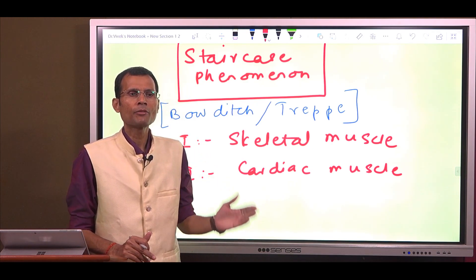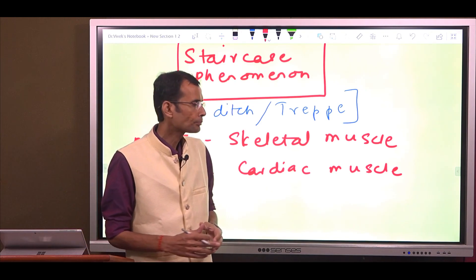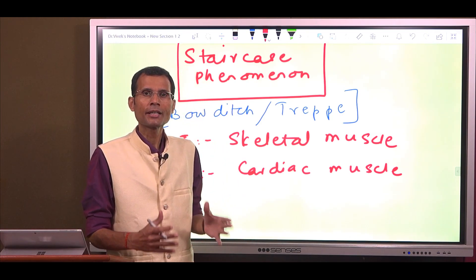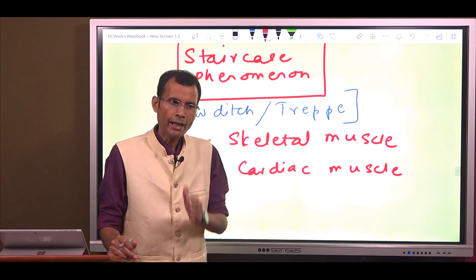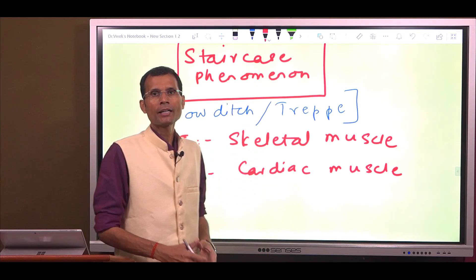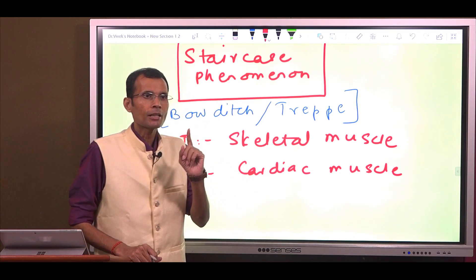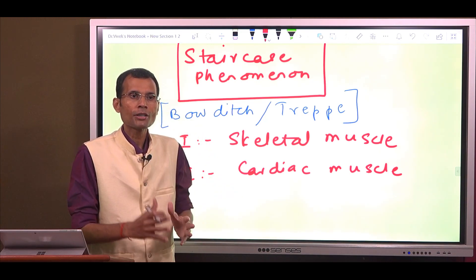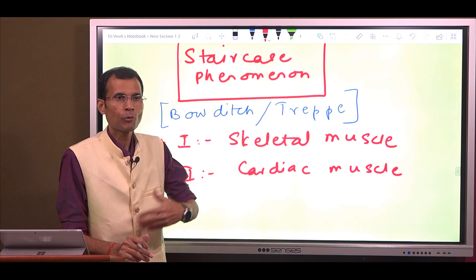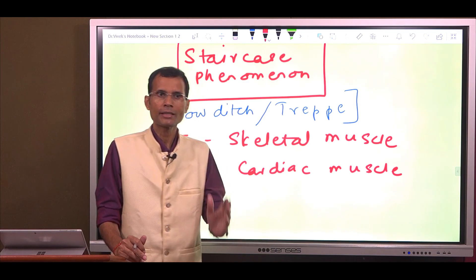This phenomenon is called by a variety of names. It is also called treppe, the German word which literally means 'the staircase,' and it is also referred to as Bowditch — named after H.P. Bowditch who first described it in 1871. To be more accurate, when Bowditch first narrated this phenomenon, it was in the heart muscle, so the 'Bowditch phenomenon' refers more to cardiac muscle than skeletal muscle.